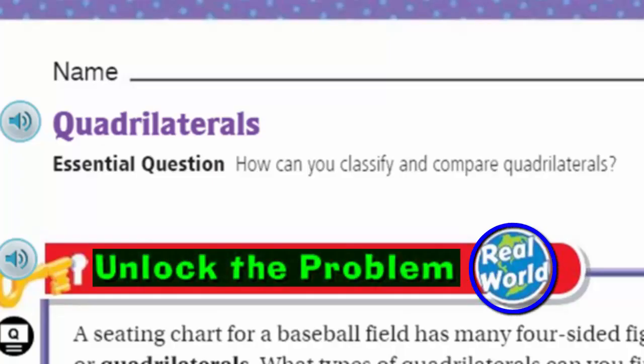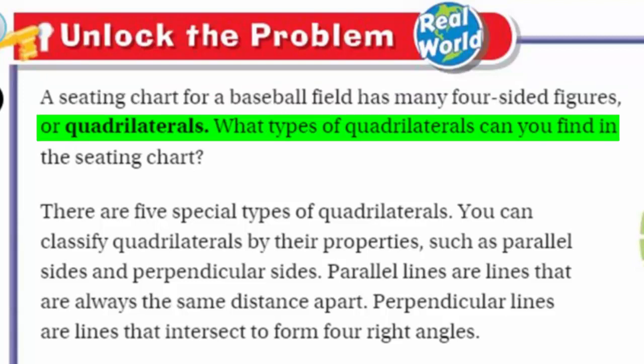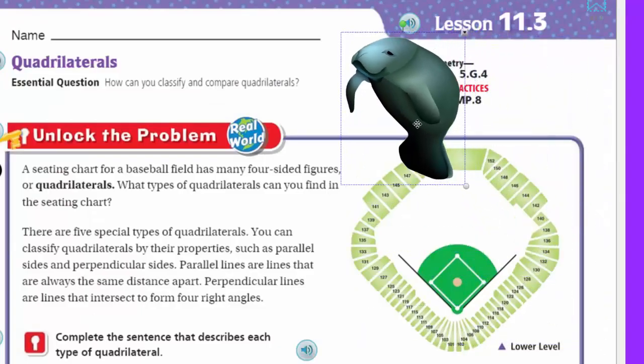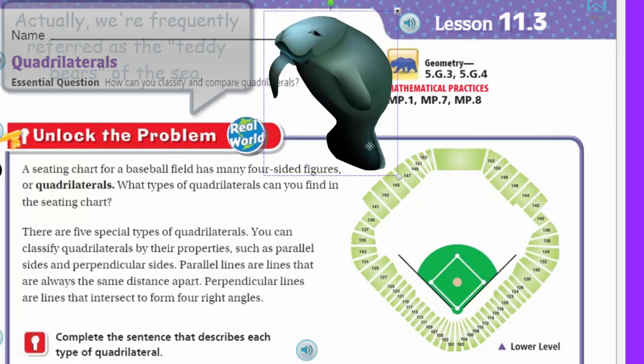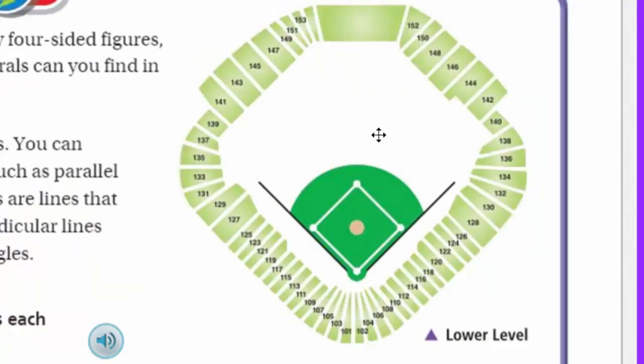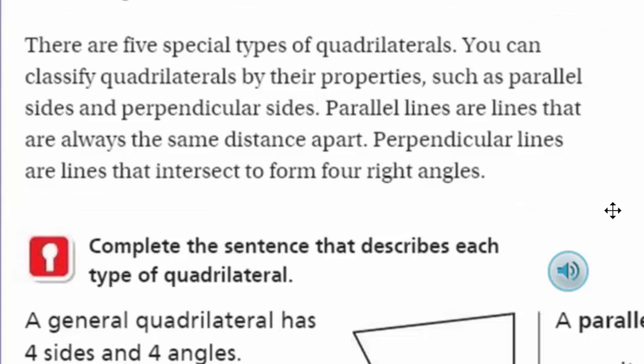But first, unlock the problem. That's right, my friends. This is real world, baby. Real world. Now, it says that a seating chart for a baseball field has many four-sided figures or quadrilaterals. What types of quadrilaterals can you find in the seating chart? Okay, I'm sorry there, Mr. Manatee. We're going to have to shrink you down. That's right. Just a little bit. We like you. You seem so gentle. You're like the gentle giant of the freshwater. Now, it does say, there's our picture that Mr. Manatee was covering. Look at that. Oh, I see all different types of quadrilaterals.